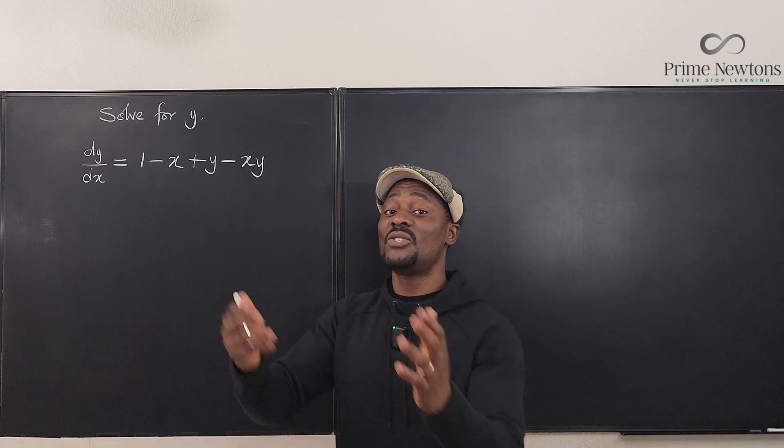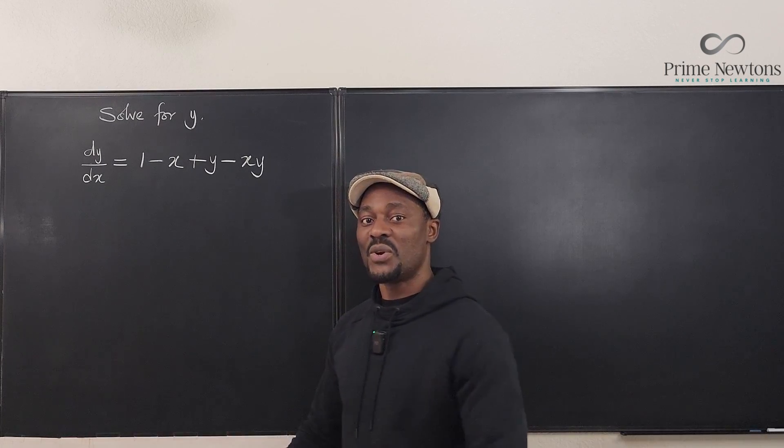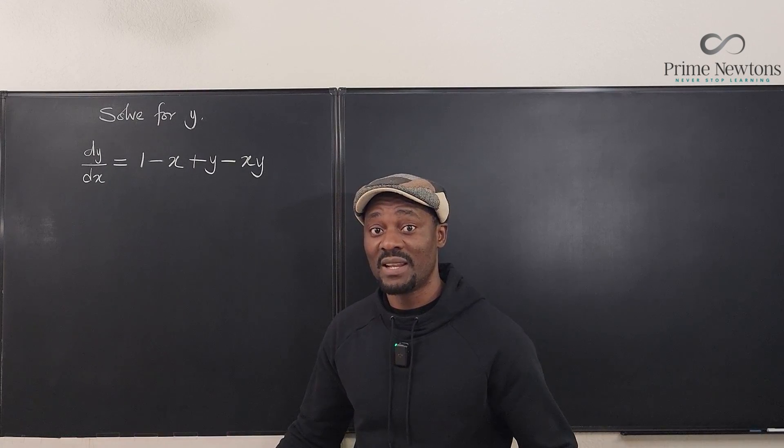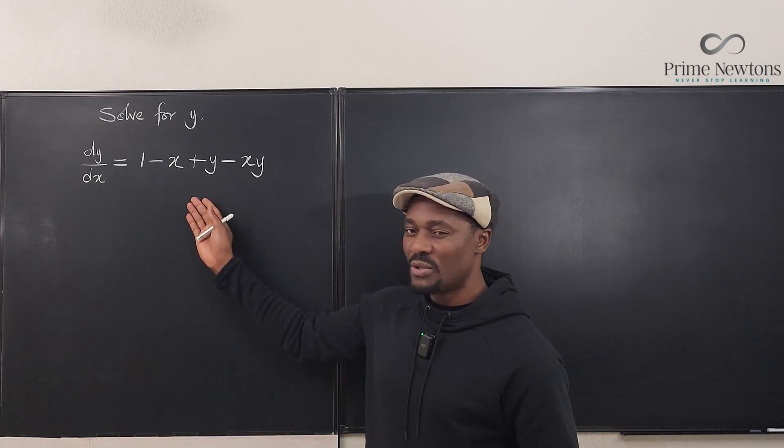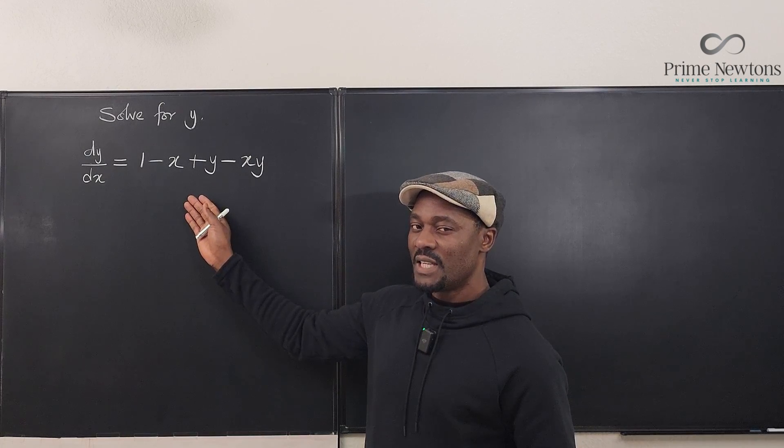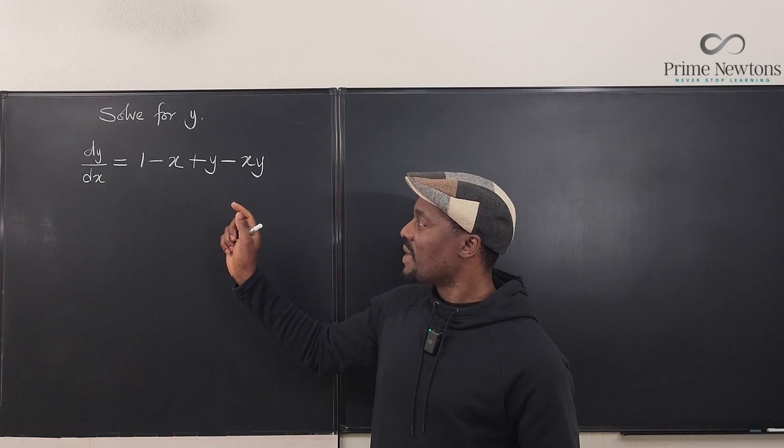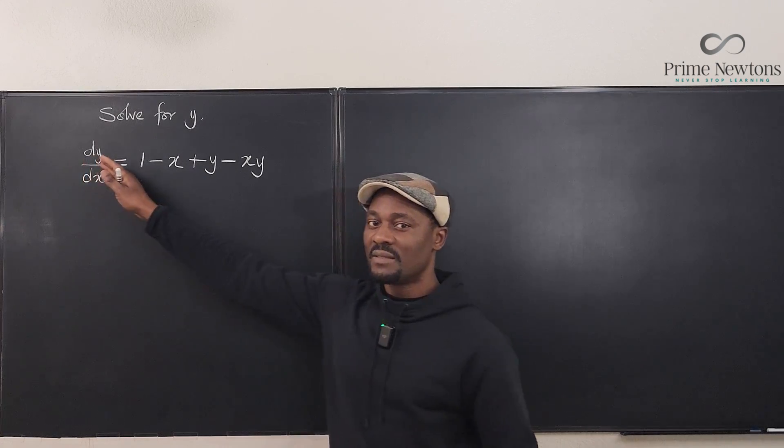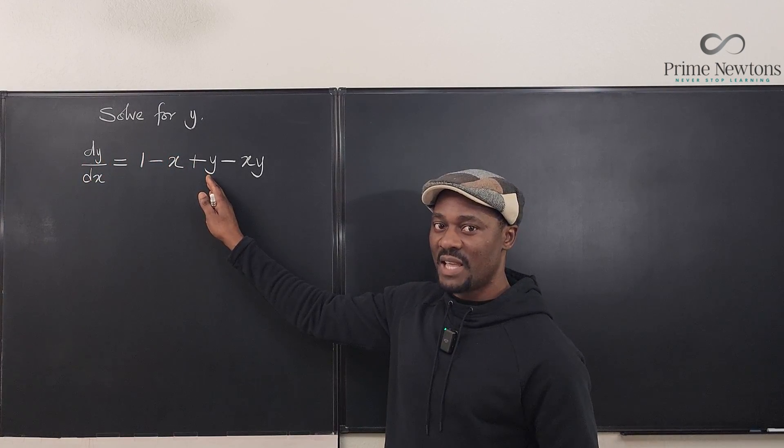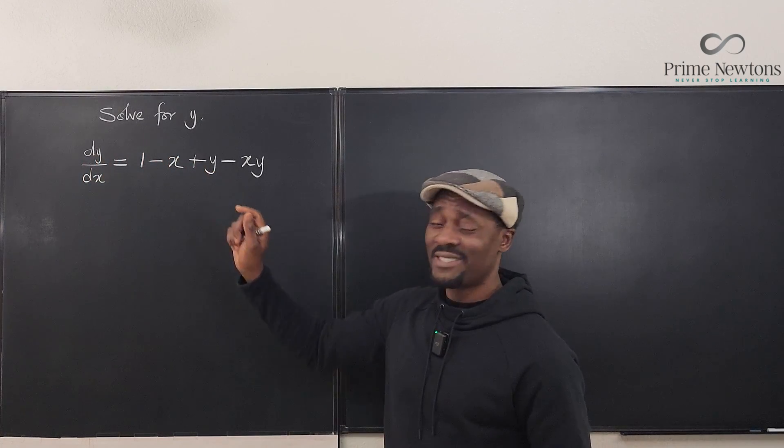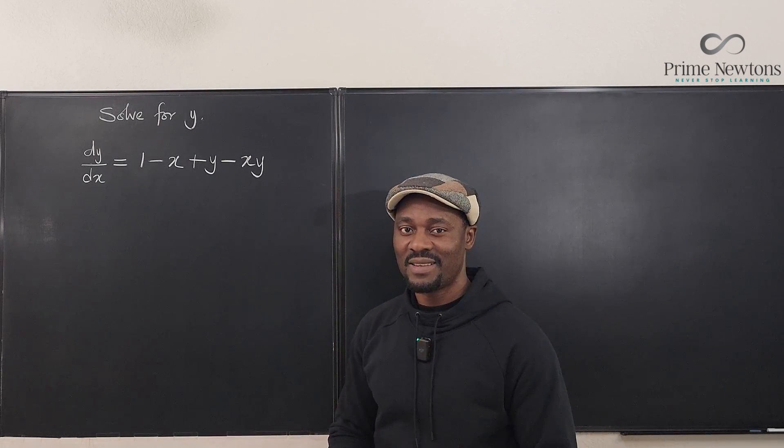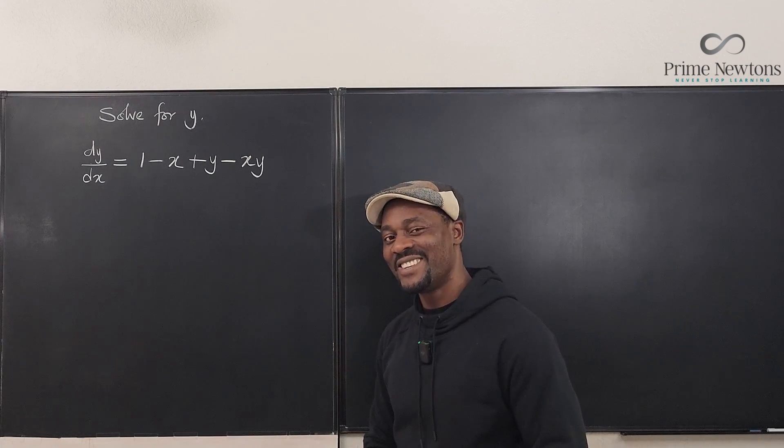If you take the derivative of e to the 3x, e to the 3x is still part of your answer. You can never get rid of it. And your suspicion should always lead you in that direction - if the derivative of something includes that same thing, that same thing has something to do with e to the x. Let's get into it.